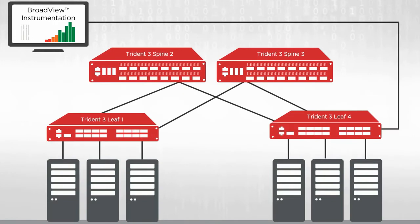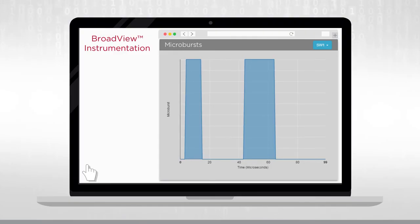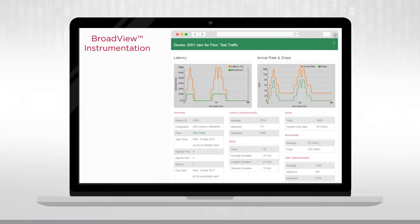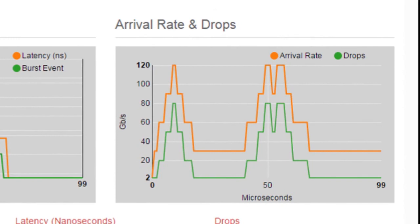Trident III's in-band telemetry is capable of embedding metadata such as QID, arrival rate, and timestamps in the forwarding plane packets, so that a remote analytics application such as Broadview Analytics can build histograms for latency and arrival rate with microsecond granularity. Trident III's in-band telemetry enables microburst detection with microsecond granularity, as shown in this picture. Clicking on a microburst instance will lead to two histograms showing latency and arrival rate. This histogram enables easier analysis of per-packet latency and burst frequency, while the other histogram shows how the arrival rate peaked for about 25 microseconds, resulting in dropped packets.